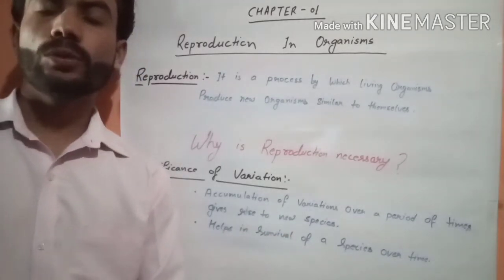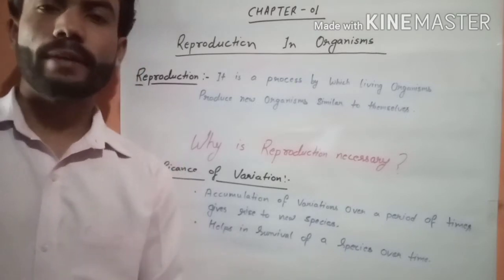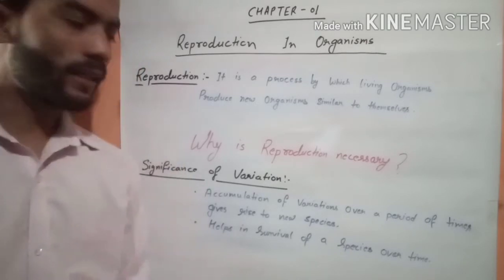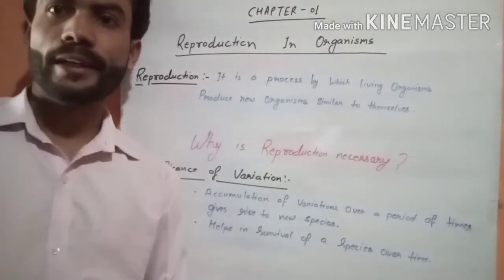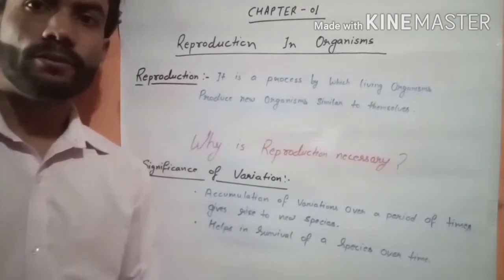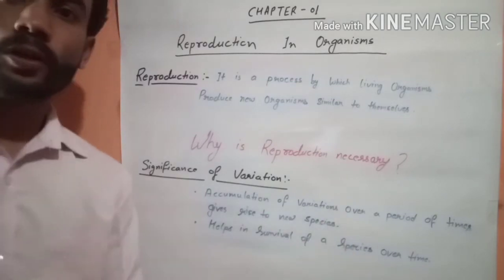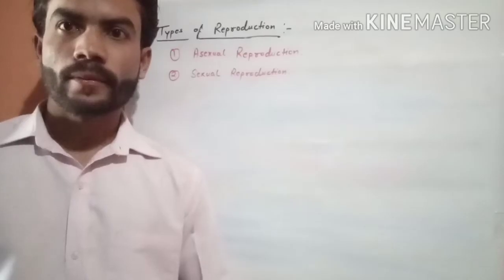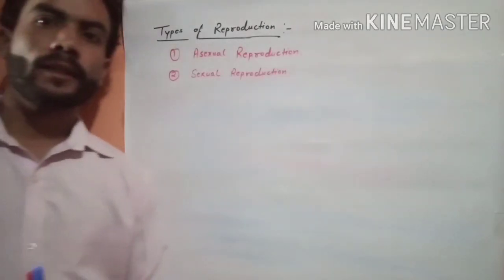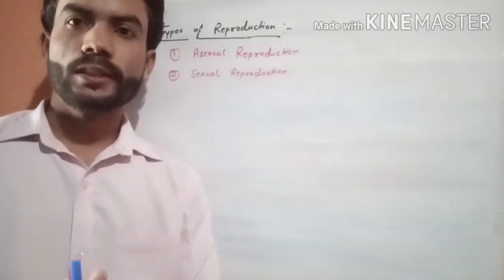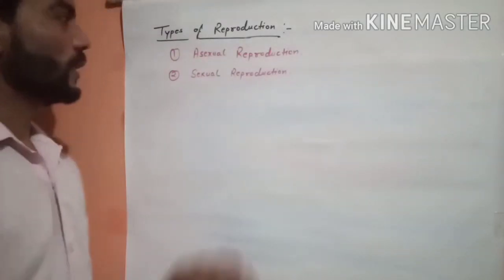And it helps in the survival of a species over time. ये species को unfavorable conditions में survive करने में help करती है। अलग-अलग characters develop होते हैं, environment के according variety और variation आता है, और एक नई species हमें देखने को मिलती है। तो basically reproduction की process दो type की होती है।